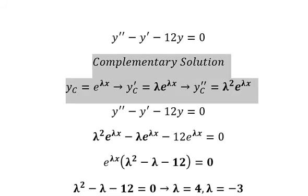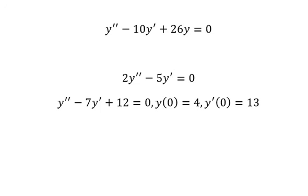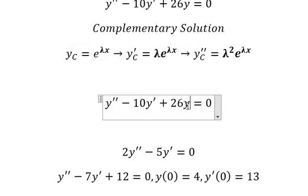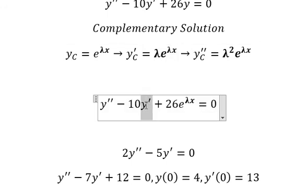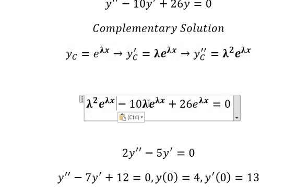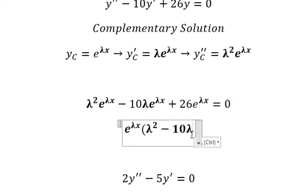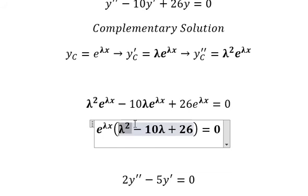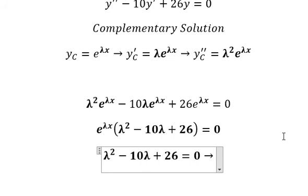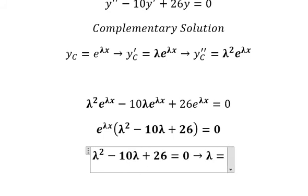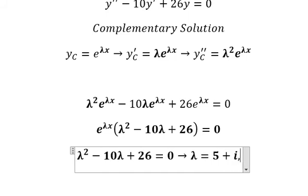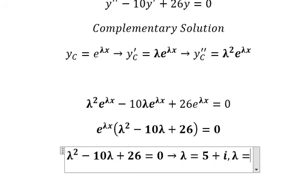We apply the same technique for question two. We substitute and factor out e to the power of lambda x, then solve the characteristic equation. The solutions are lambda equals 5 plus i and lambda equals 5 minus i.